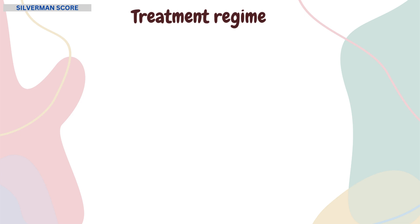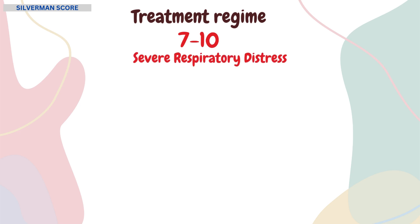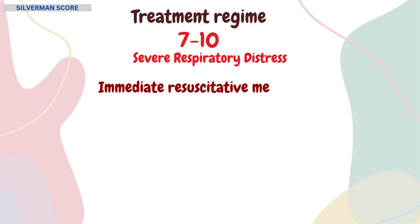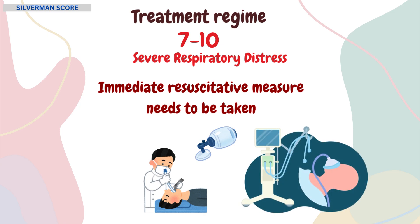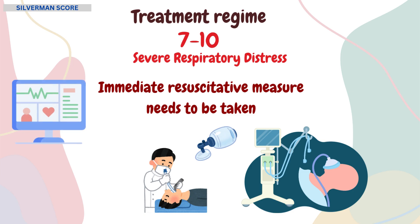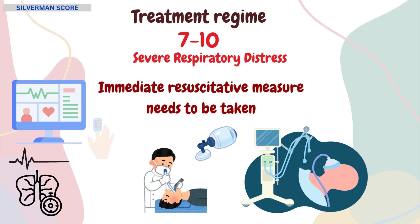If the score falls between 7 to 10, the newborn has severe respiratory distress or impending respiratory failure. In this case, immediate resuscitative measures like intubation and mechanical ventilation will be required to provide adequate respiratory support. Continuous monitoring of vital signs including heart rate, respiratory rate, oxygen saturation, blood pressure, and arterial blood gas monitoring may also be required.